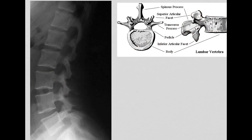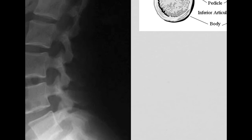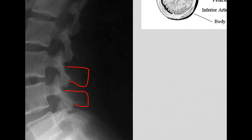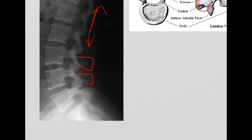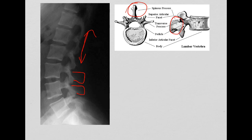Remember that on the lumbar vertebra, our spinous processes here and here are very blunt. They're not long and skinny like they were on our thoracic vertebrae. If I zoom in you'll see a little bit of that spinous process here and here. Keep in mind you are not going to see the transverse processes on the lateral view.